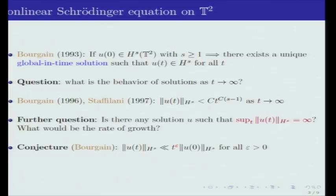In order to address this question, in a first step Professor Bourgain and Staffilani and later on others proved that we have this kind of polynomial upper bounds on the Sobolev norms of the solution at time t. In particular, you notice that as soon as we are with an s strictly greater than one, this bound is actually going to infinity when time goes to infinity.